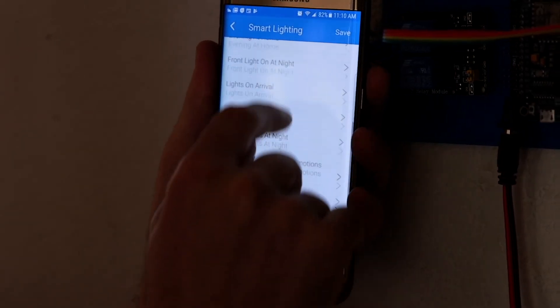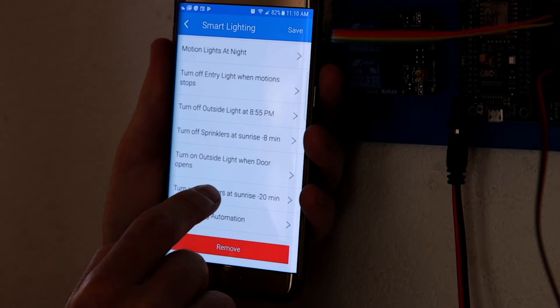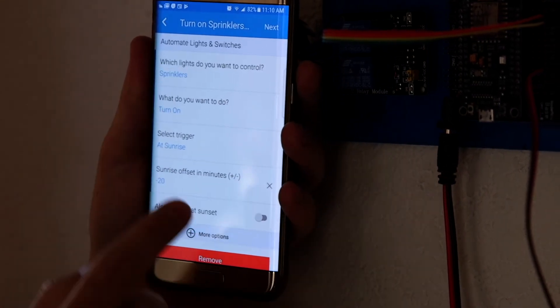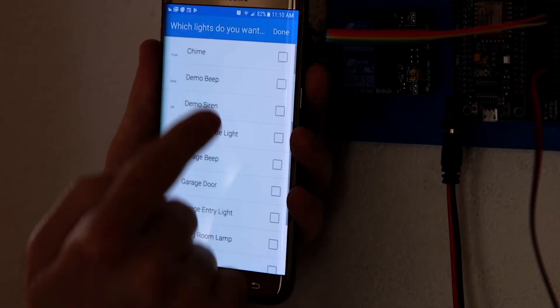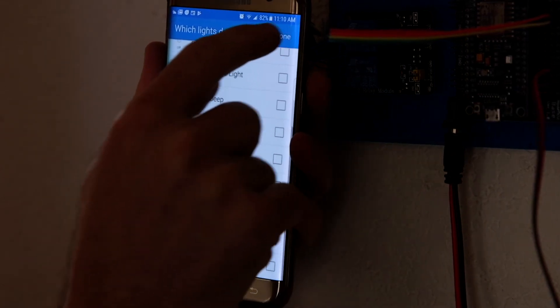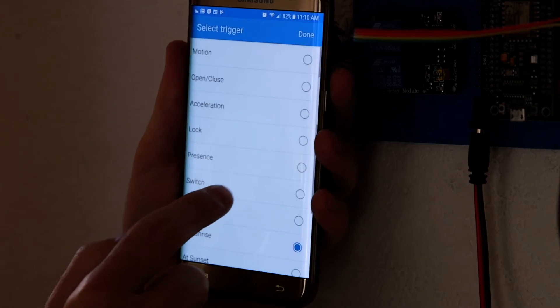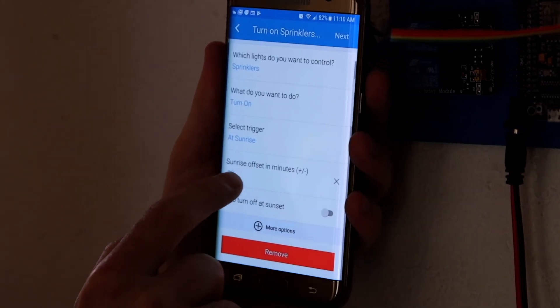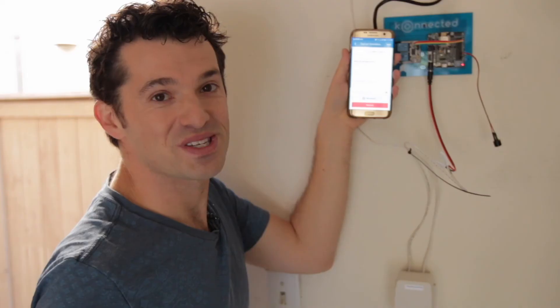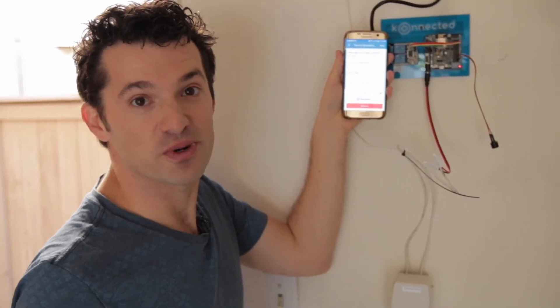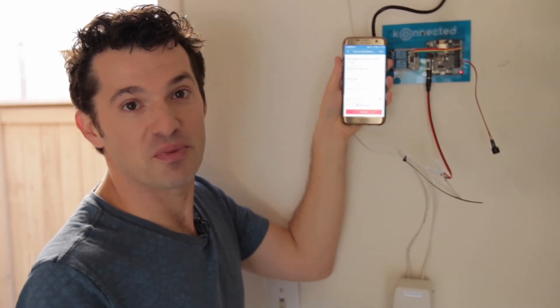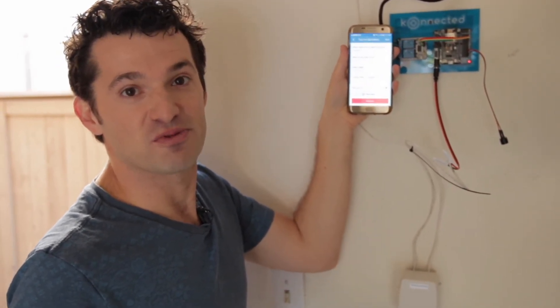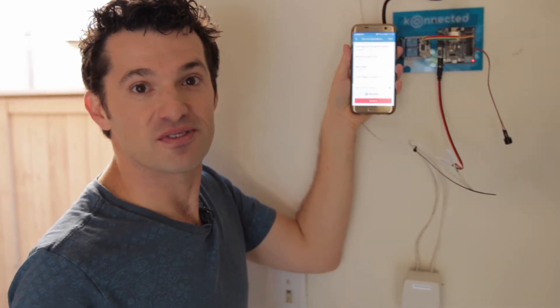So I use the Smart Lighting application and I set an automation to turn on the sprinklers 20 minutes before sunrise. All you have to do is go in here. What do you want to control? I want to control my sprinklers and I want to turn them on and add a trigger at sunrise and then an offset of minus 20 minutes. So that'll make sure that my sprinklers turn on 20 minutes before sunrise and then I have a complimentary automation to turn off the sprinklers at about 5 minutes before sunrise. So they go on for 15 minutes every morning.